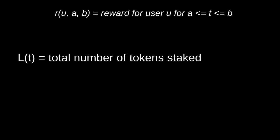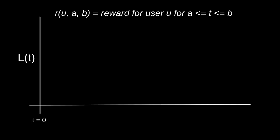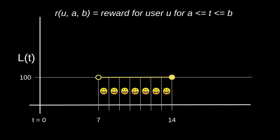L(T) is the total number of tokens staked in the staking contract, and we'll graph L(T) over time. Let's start with a simple example. Let's say Alice stakes 100 tokens at T equals 7 and then unstakes at T equals 14. So L(T) will be 0 up until T equals 7, and after T equals 7 it will be equal to 100. Alice unstakes at T equals 14, so L(T) will be equal to 0 after T equals 14.